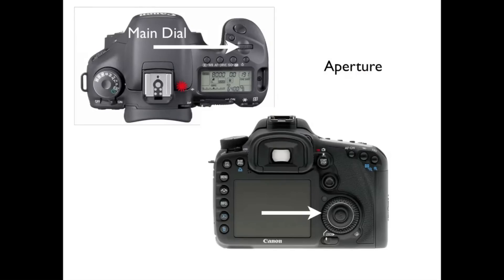To change your aperture, when you're in program mode or aperture priority, you would change your aperture by turning your main dial. When you're in manual mode, you would turn the rear dial to change your aperture. Regardless of which mode you're in, your aperture F number will present itself right here. Right now it says 00 because there's no lens on the camera — if there was a lens, you would see the F number, like 4.5 or 5.6.